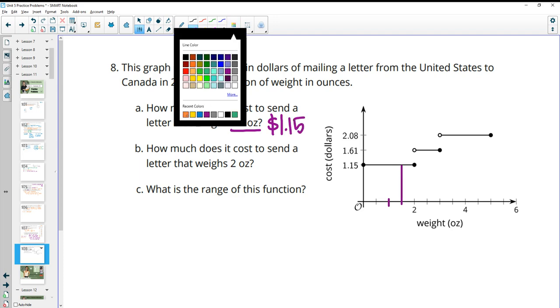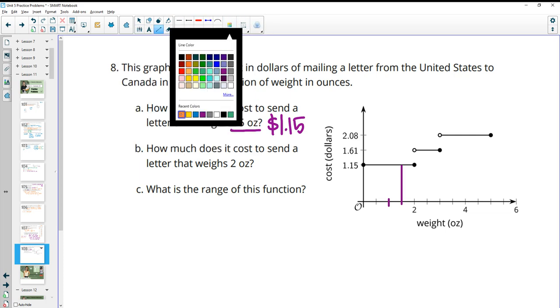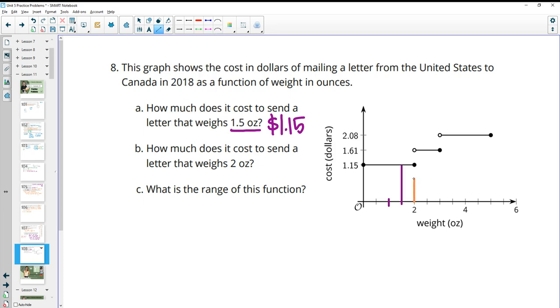Then it says, how much does it cost to send a letter that weighs 2 ounces? So then we can look at 2, and we go to here, and remember, you want to go to the closed circle. Open circle means it's not the data point, okay? So if we're exactly at 2, then it is costing us $1.15. Now, if it was 2.1 ounces, then it would be $1.61, okay? Anything above 2, up to looks like 3-something, is going to be $1.61.